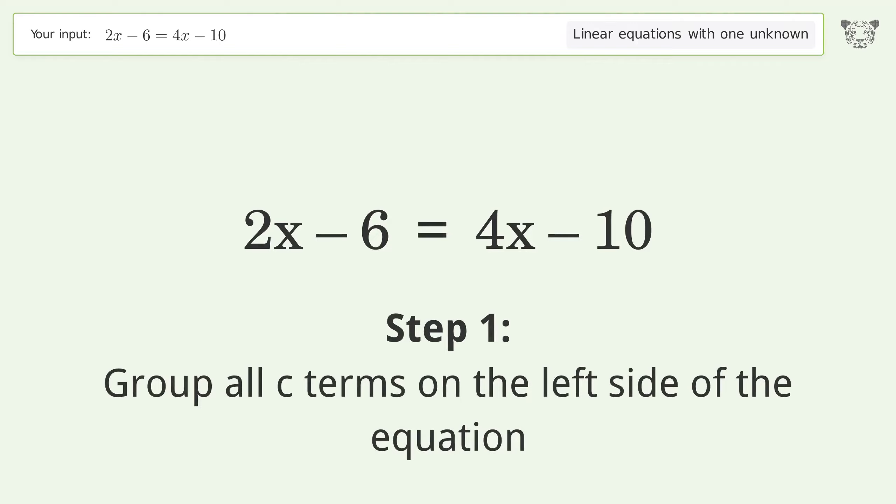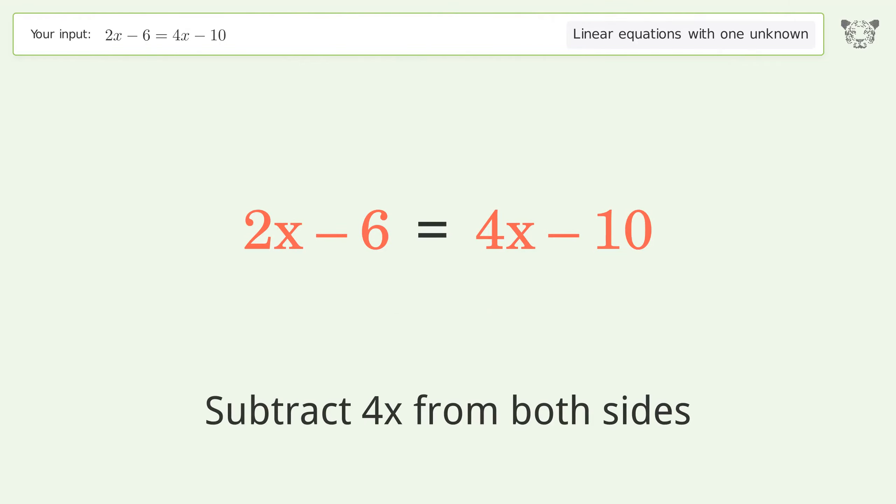Group all x terms on the left side of the equation. Subtract 4x from both sides.